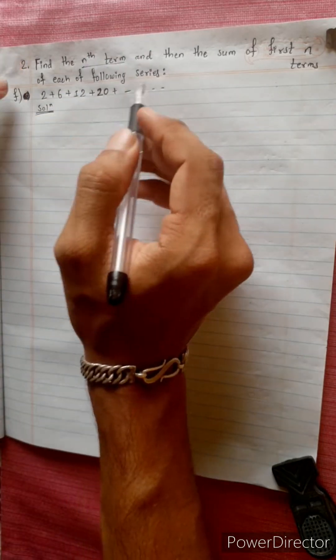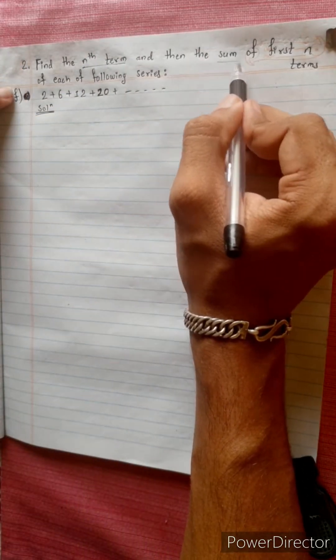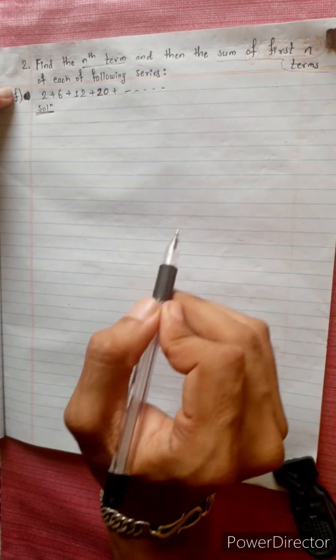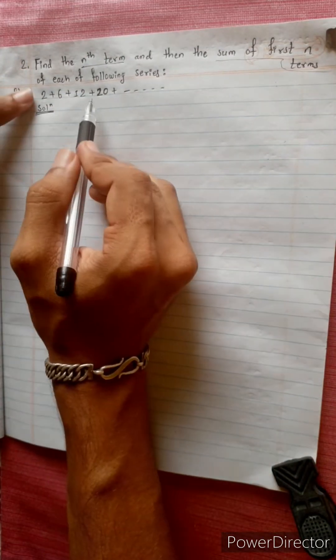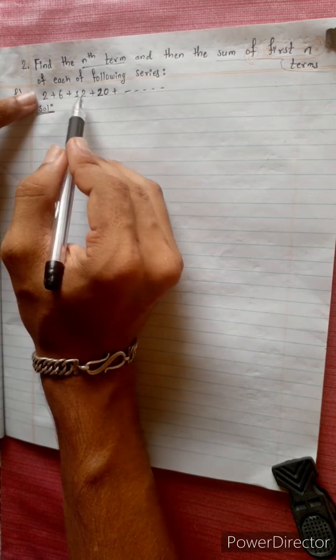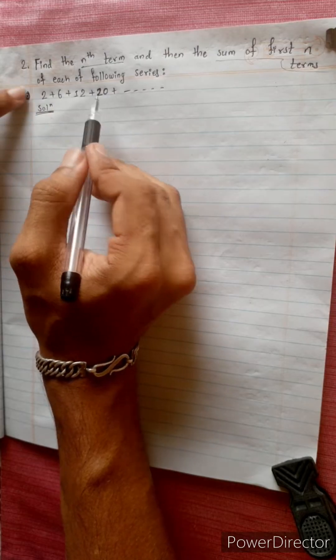Find the nth term and sum of first n terms. The sequence given is 2, 6, 12, 20.